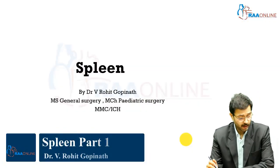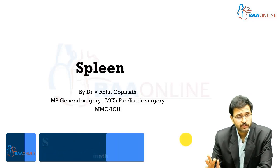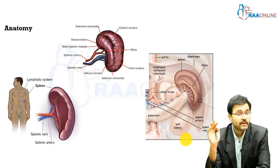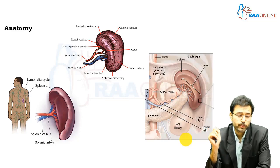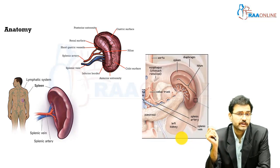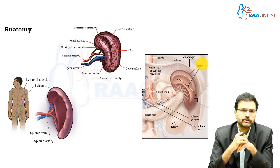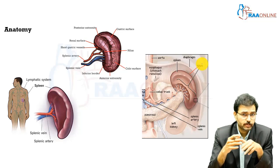A very good day to one and all. I am Dr. Rohr Kupinath and today we will be discussing about a very important organ in the reticuloendothelial system of the body — the spleen. Spleen is a classical wedge-shaped organ located in the left upper abdomen in close proximity to the ribs, and in fact it is located along the long axis of the 10th rib. Before we go on to the pathologies involving the spleen, we need to have a basic understanding regarding the anatomy of the spleen.